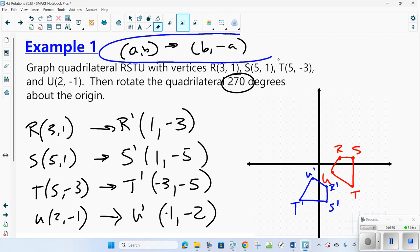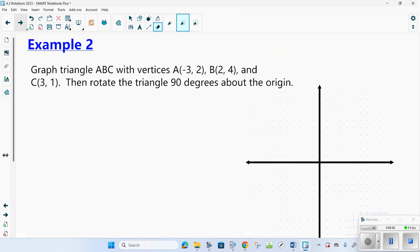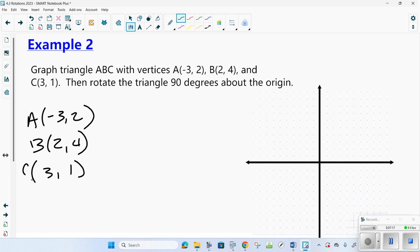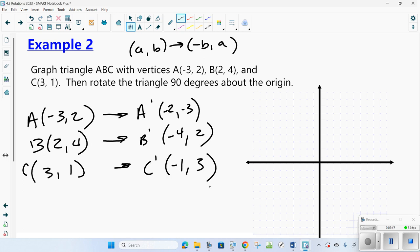Next, graph triangle ABC with vertices A(-3, 2), B(2, 4), and C(3, 1), then rotate the triangle 90 degrees about the origin. If I'm going to go 90 degrees, A, B turns into negative B, A. So A prime would be negative 2, negative 3. B prime would be negative 4, positive 2. And C prime would be negative 1, positive 3.